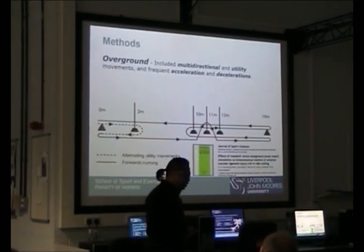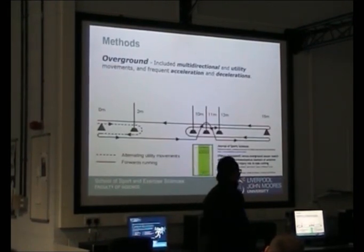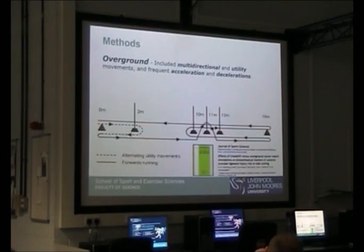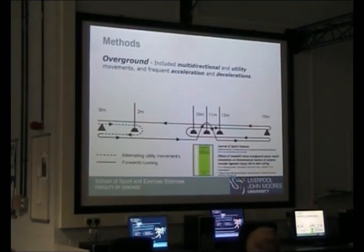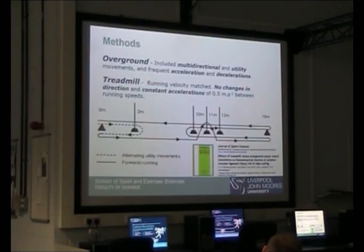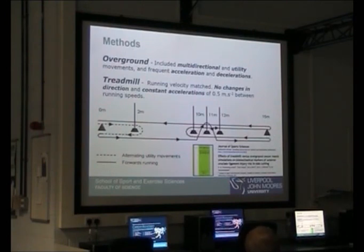The overground match simulation was adopted from a study by Cathy Small and Lovell, which we modified from 20 meters to 15 meters. The overground simulation was designed to include high multi-directional and agility movements with high acceleration and deceleration. The treadmill simulation was programmed to induce a similar activity profile, however only with straight line running, no change of direction, and lesser acceleration.